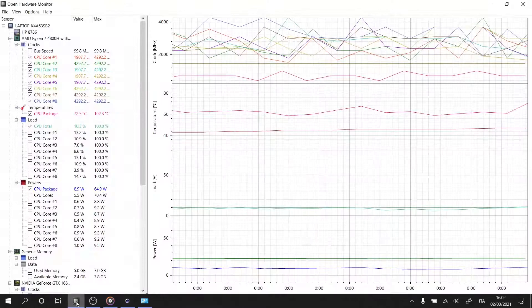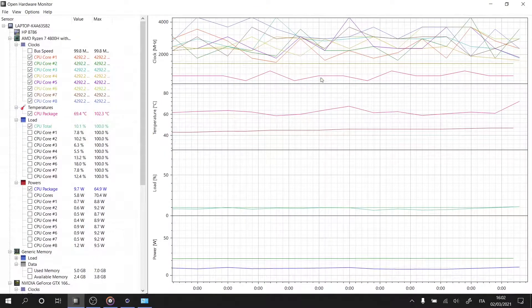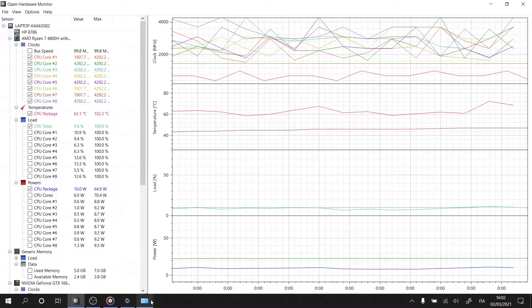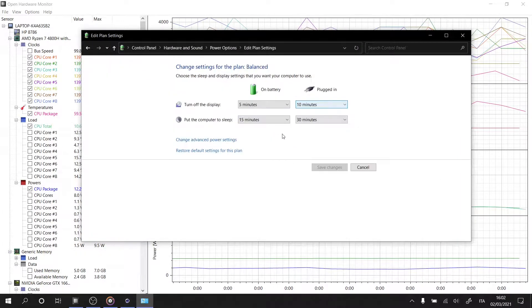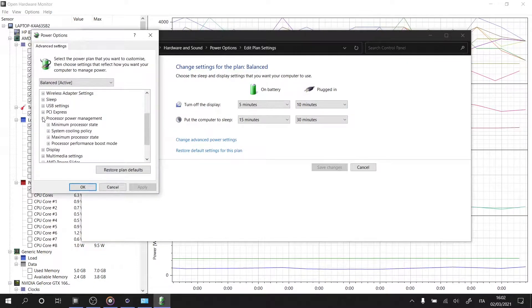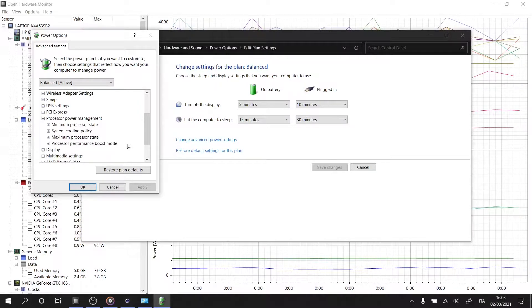So first thing first, I'll have HWMonitor open so you can see how the maximum clock speed changes as I run Cinebench R23. Then I'll go to the power plan and then change advanced power settings, scroll down to processor power management.